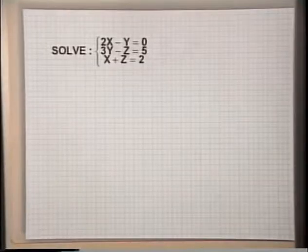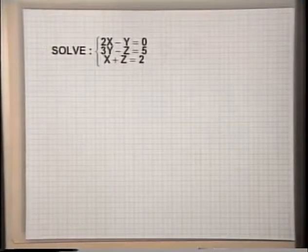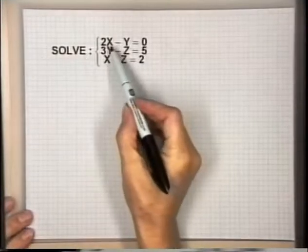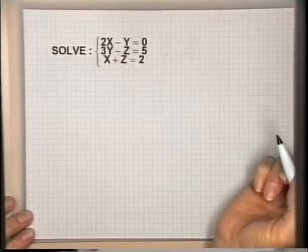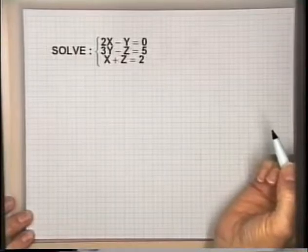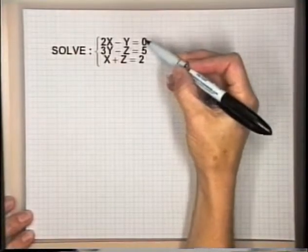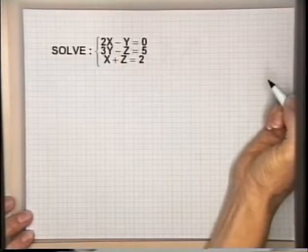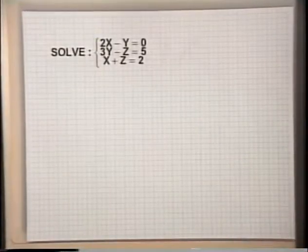In this second example, we again have a system of three equations and three variables, but not every variable is in every equation. Sometimes that is a little confusing for students, but if you just follow the steps, these will also work out easily. My first equation is 2x minus y equals 0; my second equation is 3y minus z equals 5; and my third equation is x plus z equals 2. I still have three variables x, y, and z, so I need an ordered triple as a solution. In the first equation the z is missing, while in the other two equations either x or y is missing.